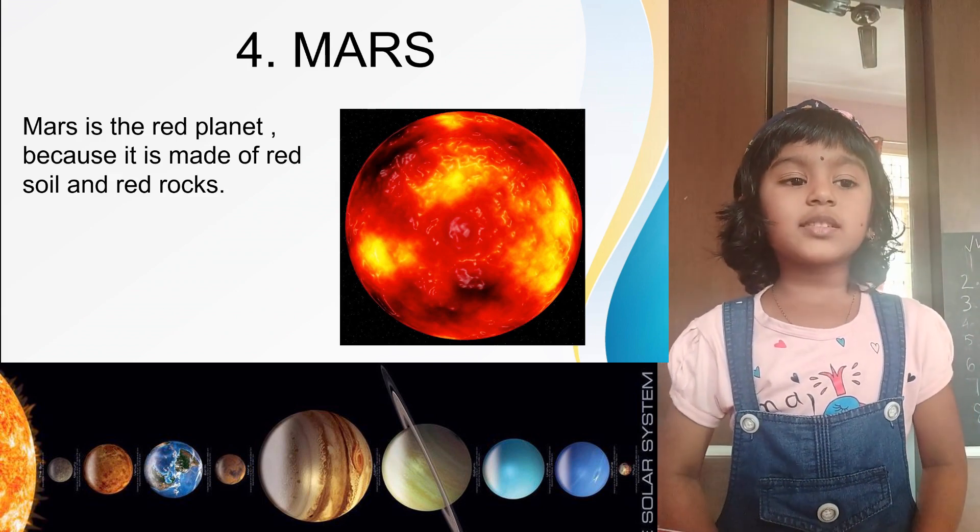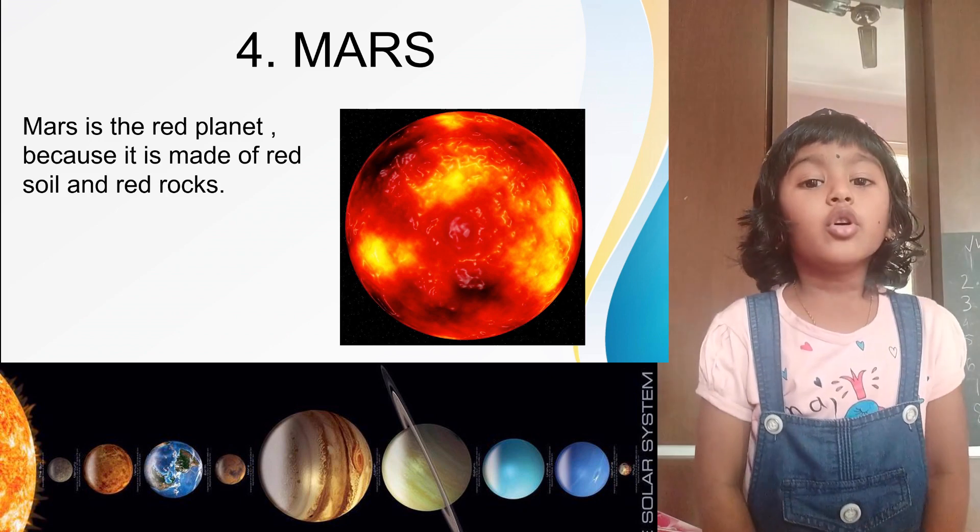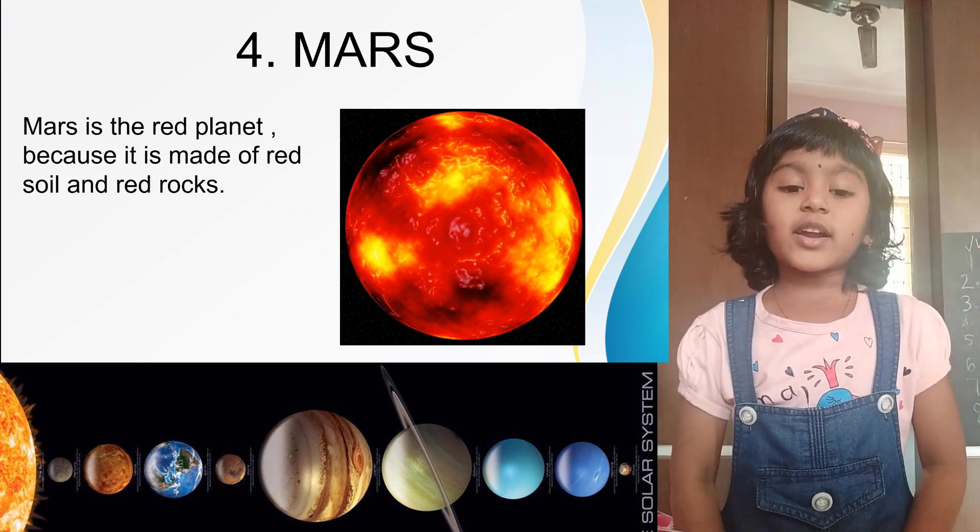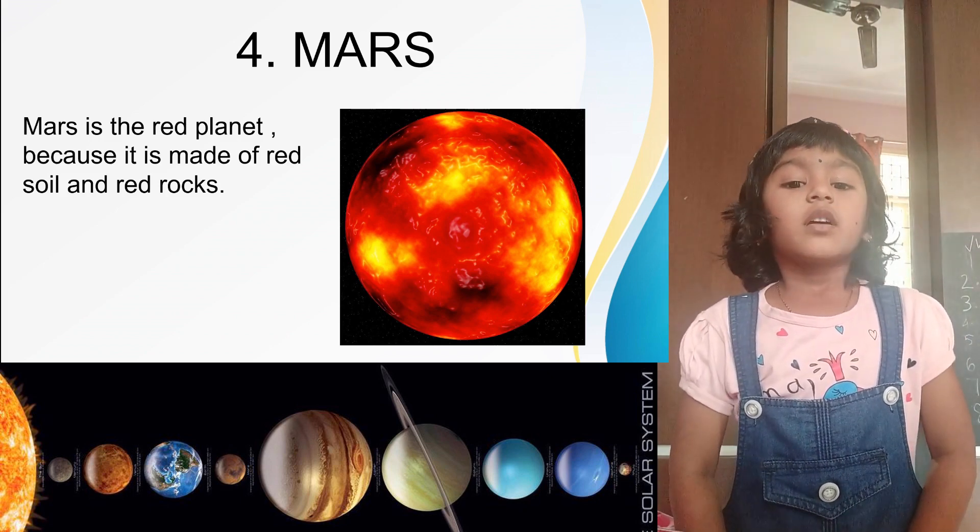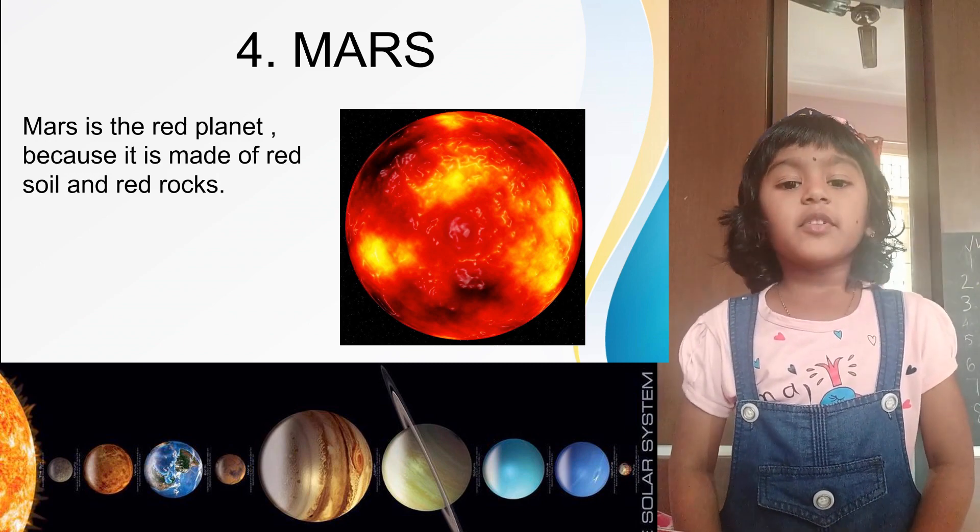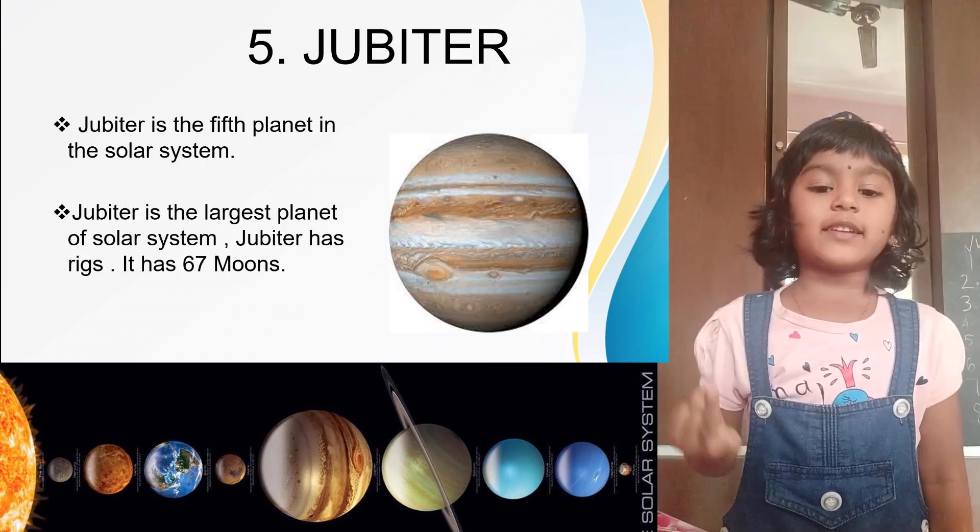Mars. Mars is the fourth planet of the solar system. It is a red planet because it is made of red soil and red rocks.